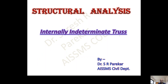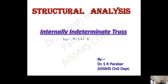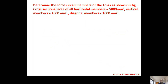Good afternoon. Today we are going to see the problem on internally indeterminate truss. In the last video we dealt with externally indeterminate truss. When we talk about internally indeterminate truss, for internal indeterminacy, DSI is equal to M minus 2J minus 3. So now we will start with the problem.